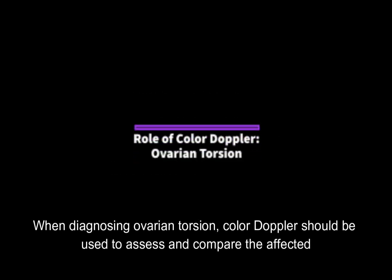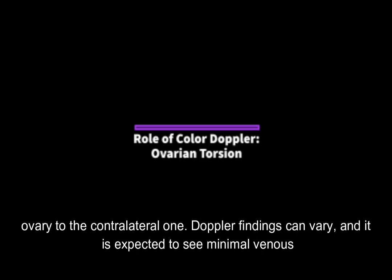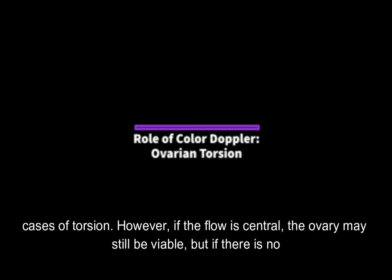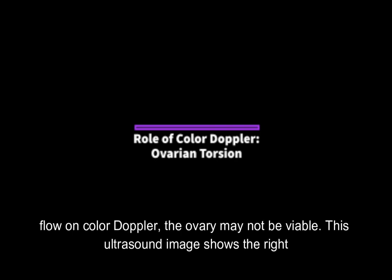When diagnosing ovarian torsion, color Doppler should be used to assess and compare the affected ovary to the contralateral one. Doppler findings can vary, and it is expected to see minimal venous flow. Due to the dual blood supply of the ovaries, normal arterial flow can still be observed in cases of torsion. However, if the flow is central, the ovary may still be viable, but if there is no flow on color Doppler, the ovary may not be viable.